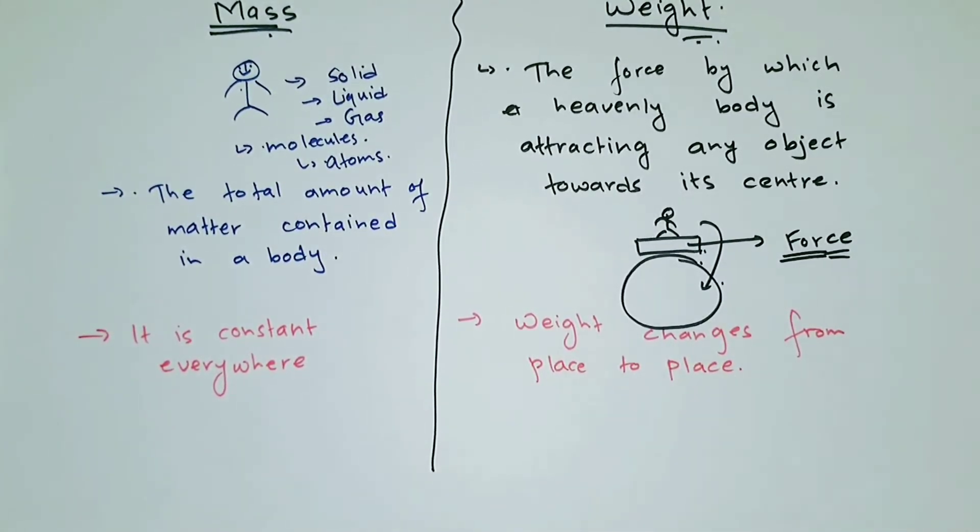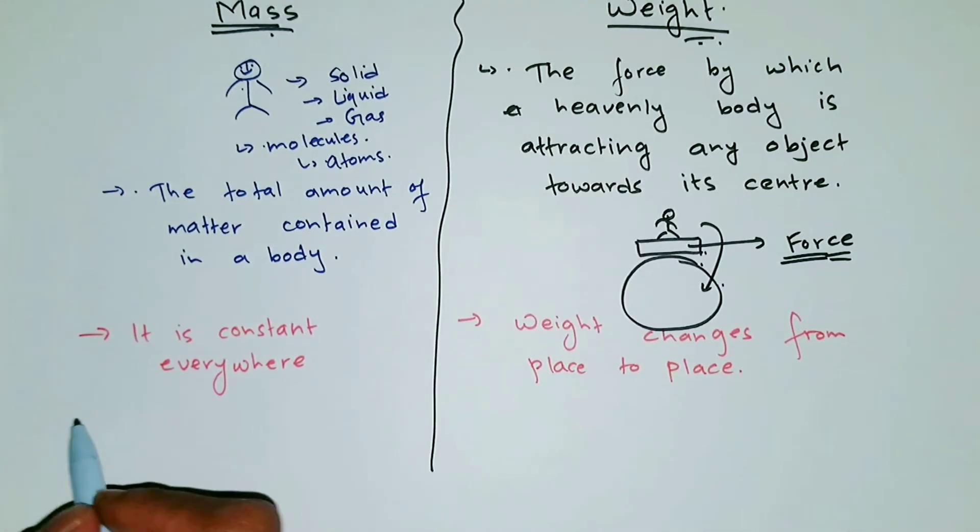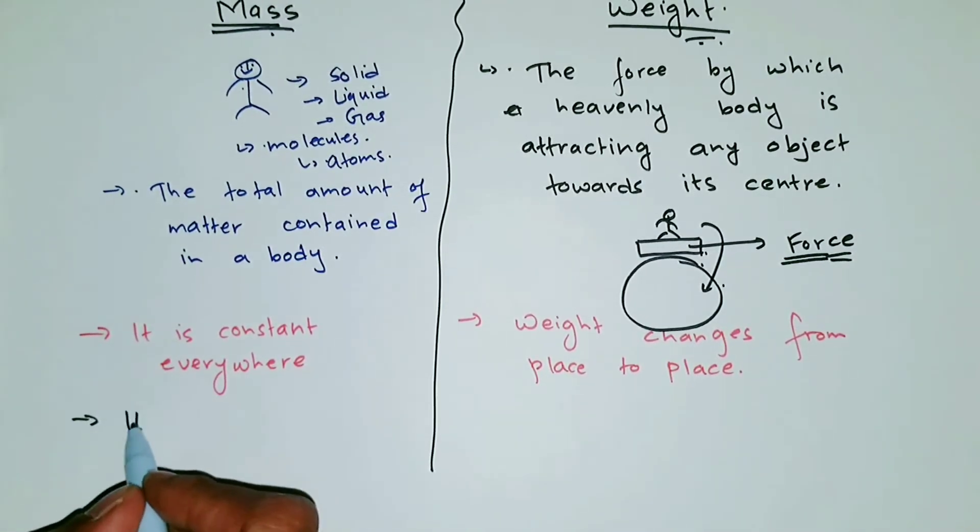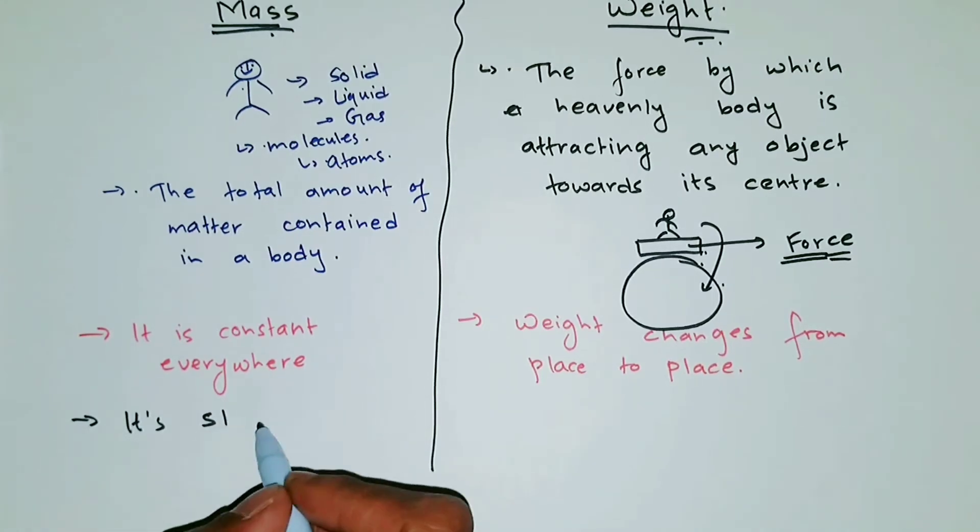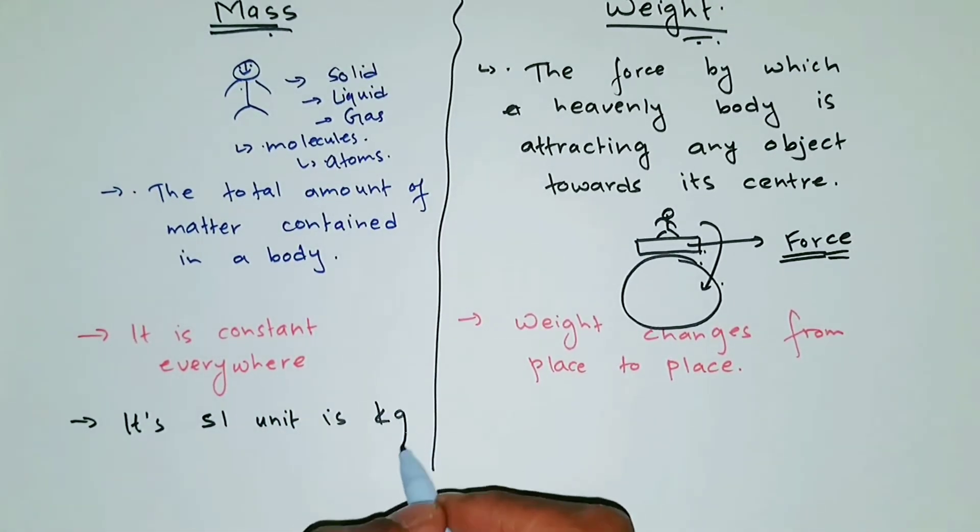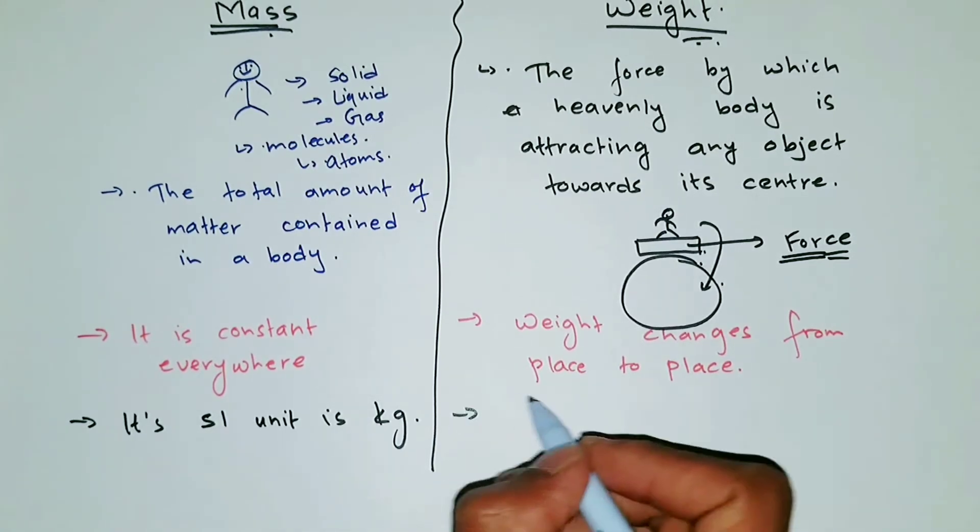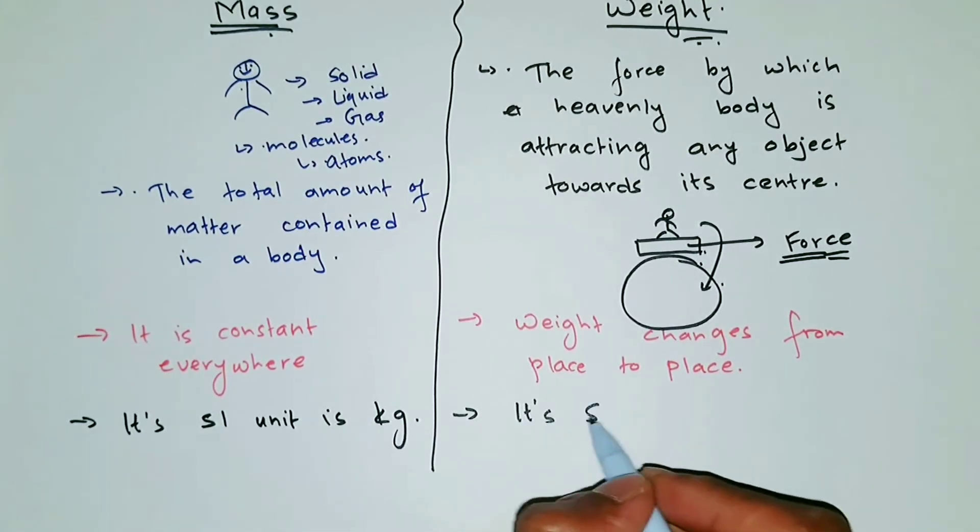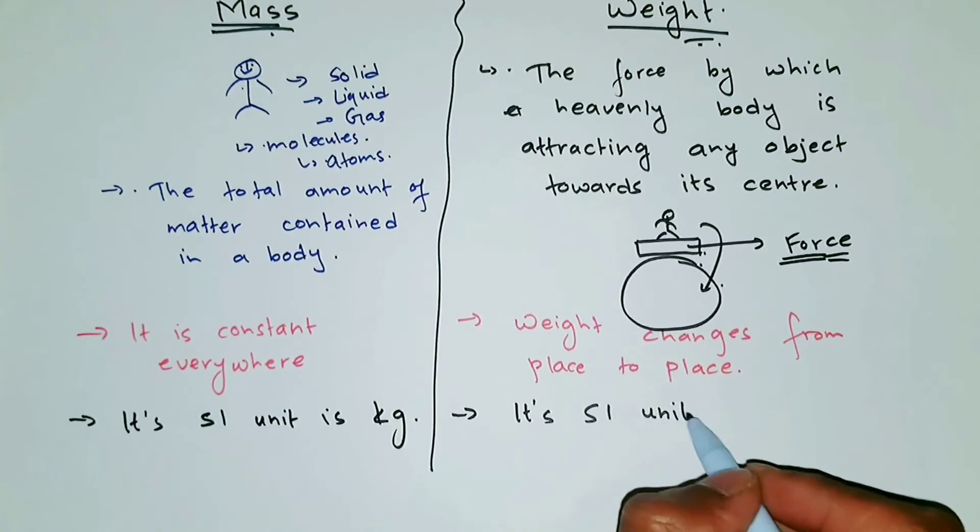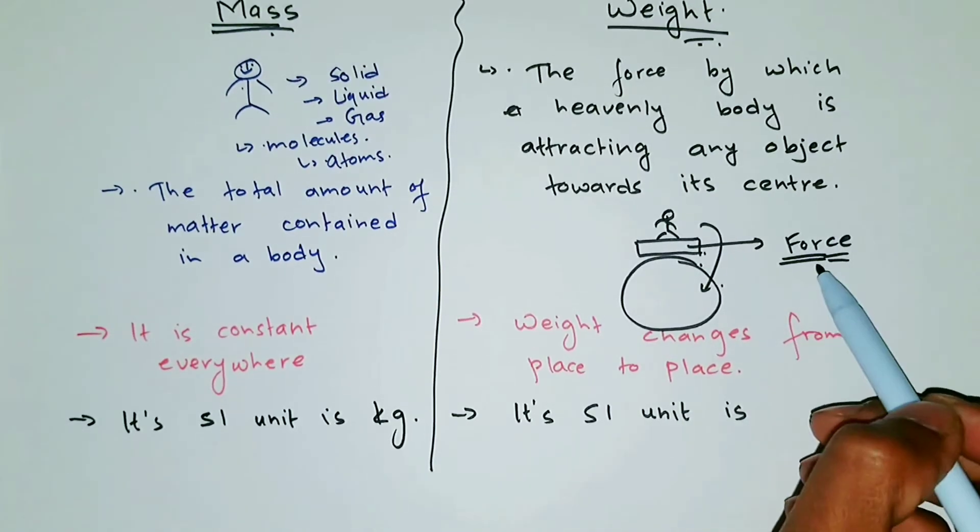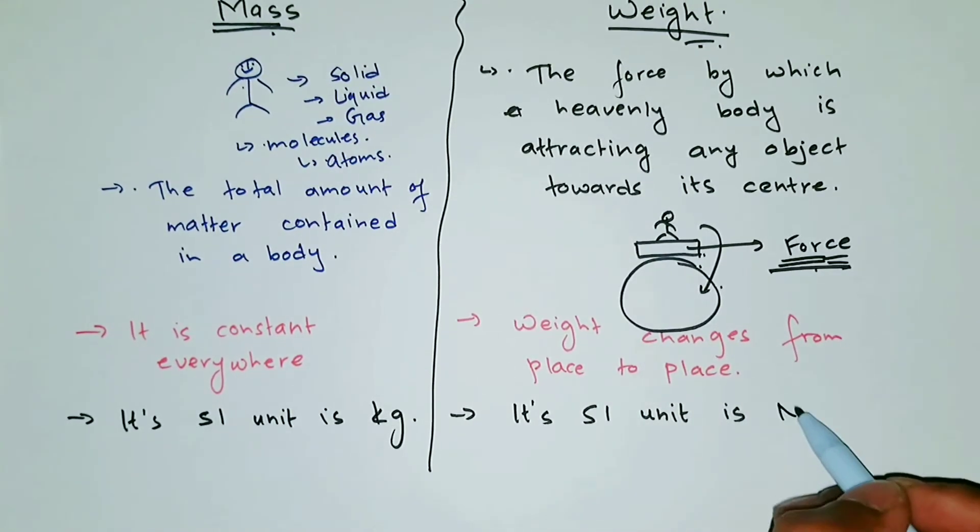You could write another difference as the units. Their units are different. Its SI unit, since it's mass, its SI unit is kilogram. And for weight, its SI unit is, since it's force, its SI unit is Newton. So you can just write N, or you could write Newton.